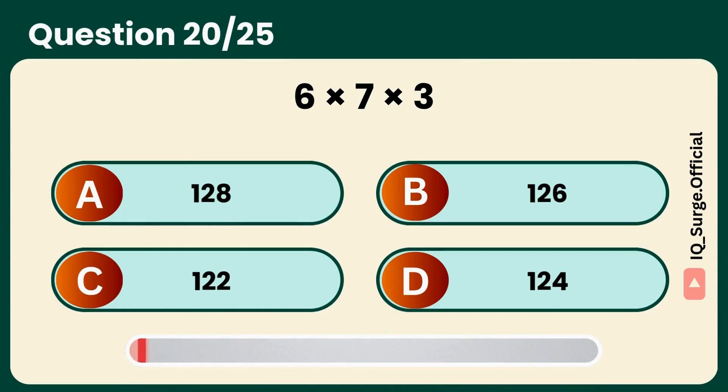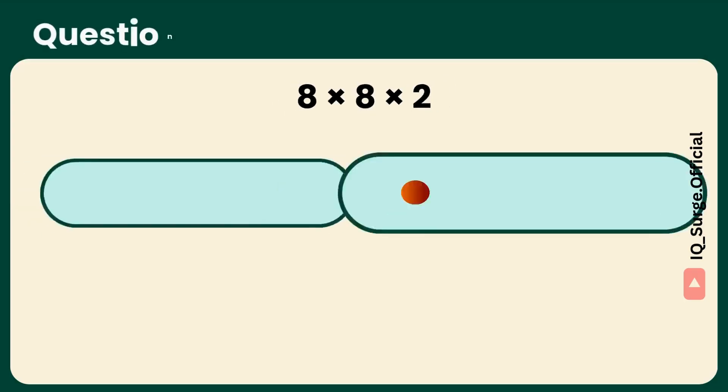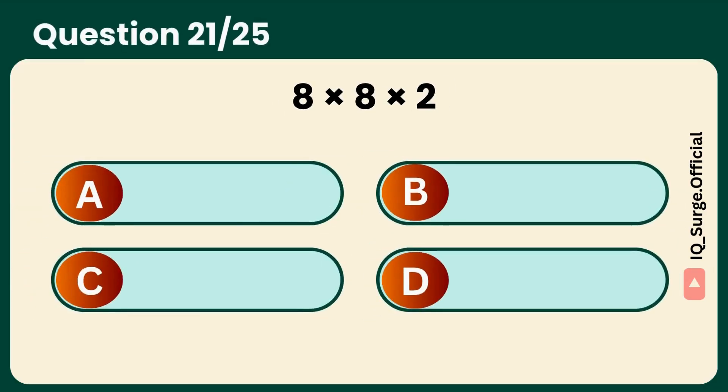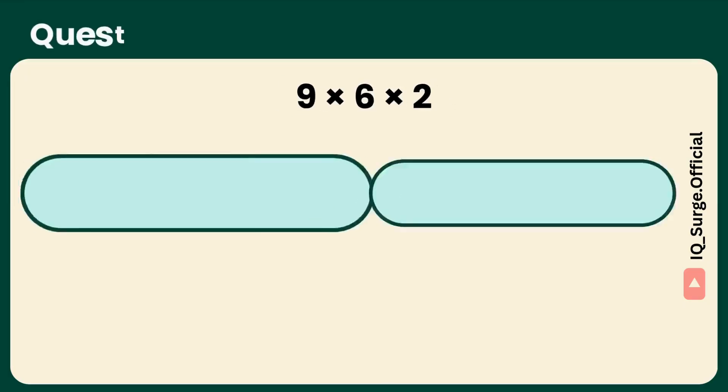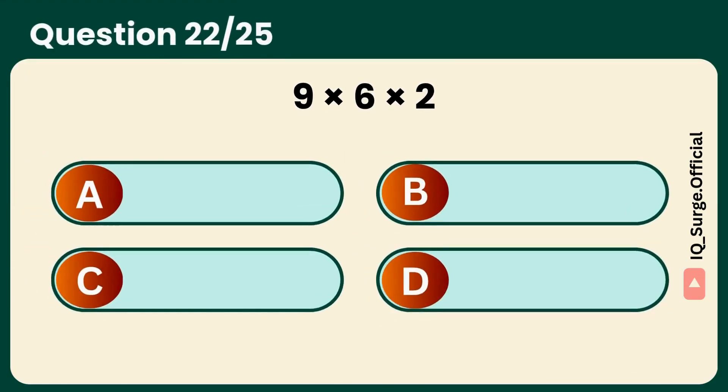This one's a sneaky one. Answer: B, 126. What is 8 times 8 times 2? Two eights, big win. Answer: B, 128. What is 9 times 6 times 2?